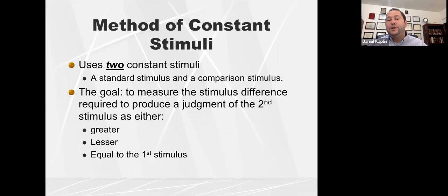So the method of constant stimuli. So you use two constant stimuli. You have a standard stimulus and a comparison. And ultimately the goal is to be able to determine whether that second stimulus is greater than, less than, or equal to the first stimulus. And that could be a visual color. It could be a sound. It could be weights as we talked about earlier in the lesson, but using two constant stimuli, it's basically you have one and a comparison stimulus.